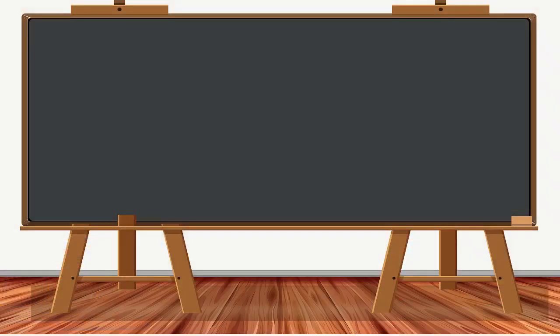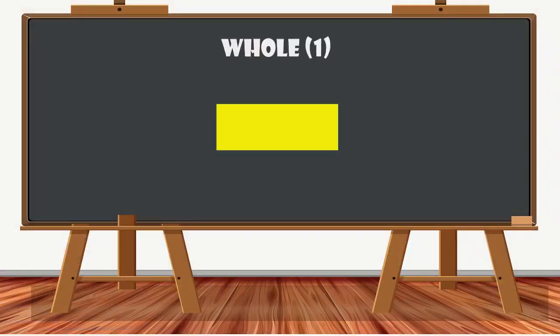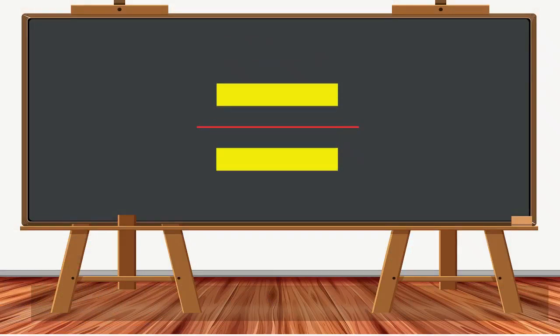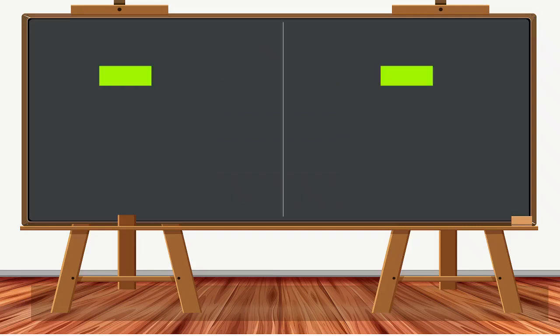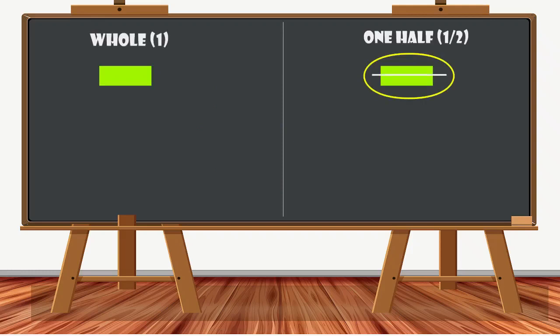For example, take a look at this whole rectangle. Now watch as it is divided into two equal halves. We get two halves. Each part is called a half, or one half. Here's a game we can play — look at the two images and try to circle the shape that is one half of a whole. Cool!